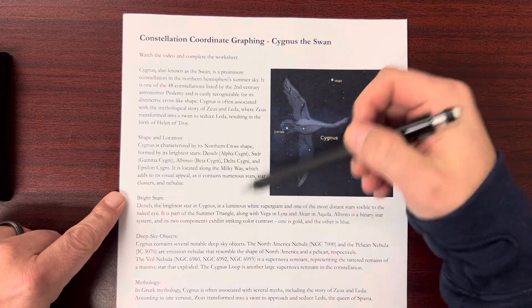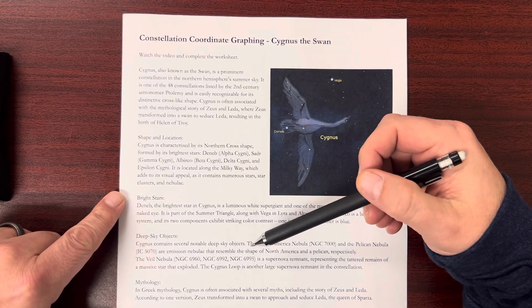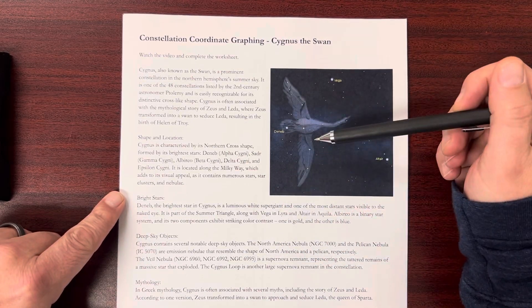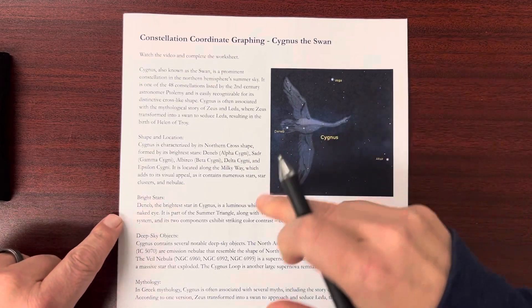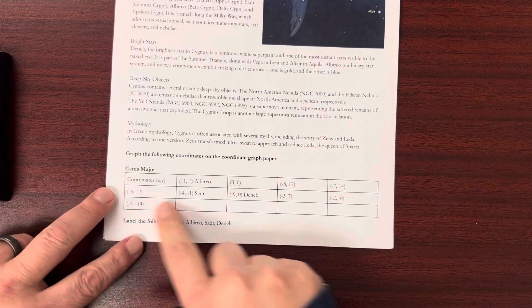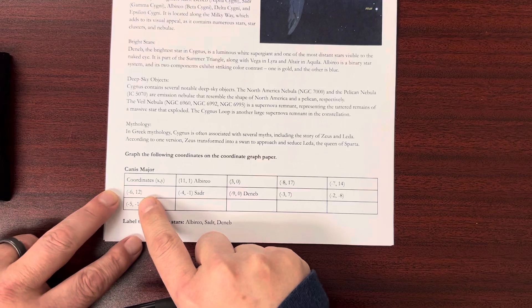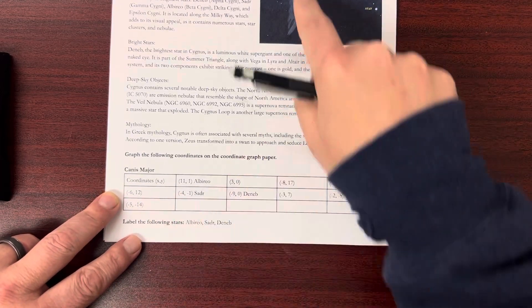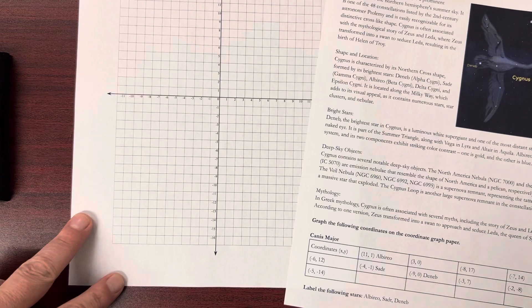Talks about the constellation here, some of the important stars, some of the mythology behind Cygnus the Swan. But down here, we have our coordinates for graphing the constellation onto our coordinate graph paper.